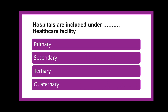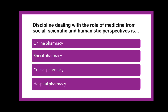The next question is: Hospitals are included under dash health care facility — whether primary, secondary, tertiary, or quaternary health care facility? As discussed in the theory video, there are various levels of health care facility under the Indian medical system. Hospitals belong to the secondary health care facility.